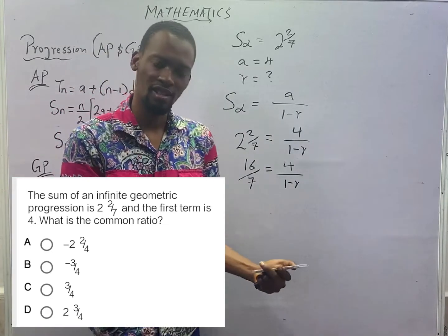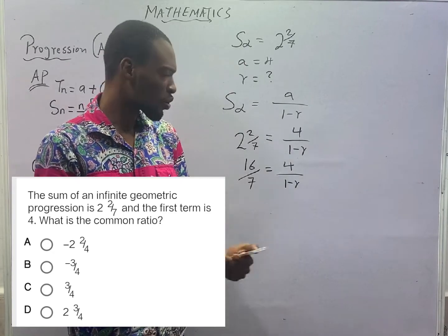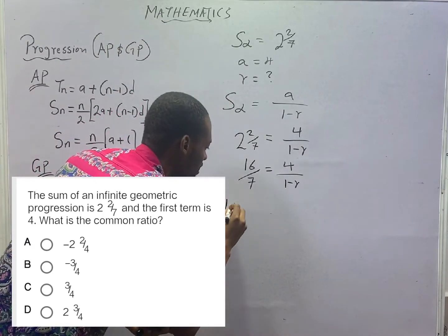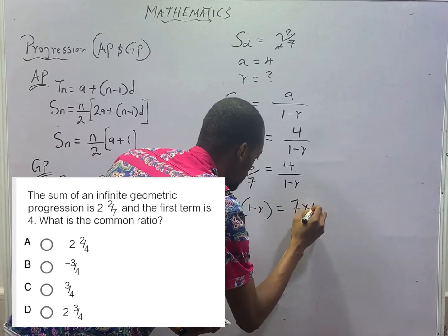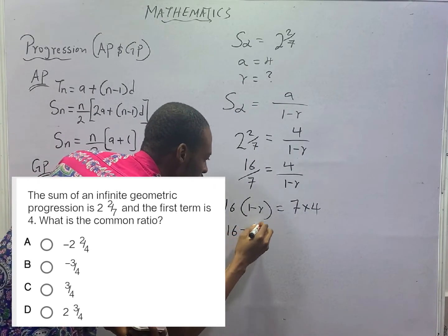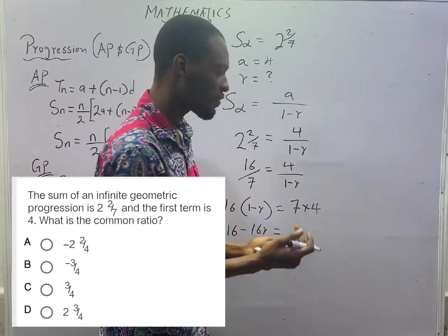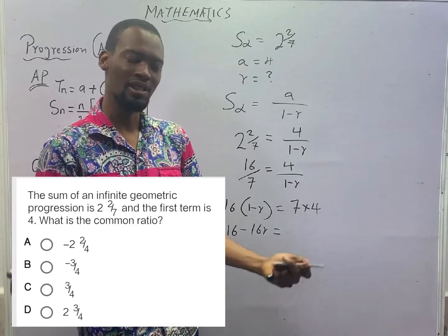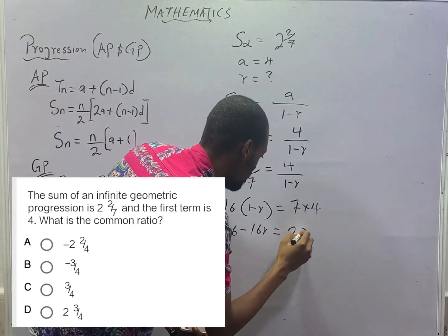Ladies and gentlemen, when you see two fractions separated by equal sign, you must cross-multiply. 16 times (1-R) equals 7 times 4. When you open this up, you get 16 - 16R equals 7 times 4. 7 times 2 is 14, another 7 times 2 is 14. 14 plus 14 is 28.